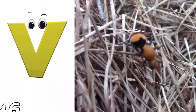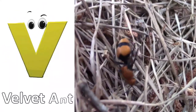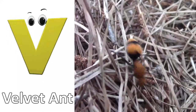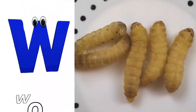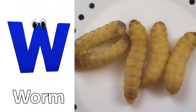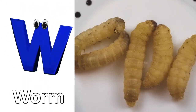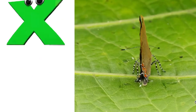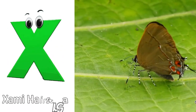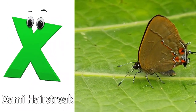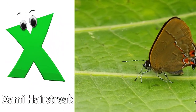V is for velvet ant, velvet ant. W is for worm, worm. X is for zemi hairstreak, zemi hairstreak.